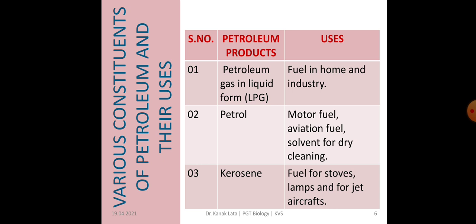Now let us see what are the various constituents of petroleum and their uses. First is petroleum gas in liquid form, that is liquefied petroleum gas — LPG. This LPG is used as fuel in homes and industry. Second is petrol, which is used as fuel and also as a solvent for dry cleaning — to clean dust, grease, or dirt from clothes. It is used as motor fuel, aviation fuel, and solvent for dry cleaning.